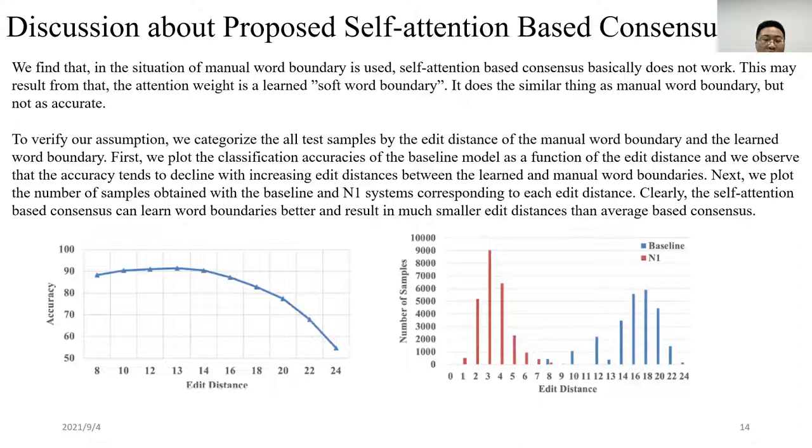While one of the most significant differences between our proposed framework and the previous method is the proposed self-attention based consensus. This ensures that the model pays more attention to the relevant frames during classification. Therefore, the result of the system using only self-attention, denoted as N1, improves the classification performance over the average based consensus in baseline. To further analyze why our proposed self-attention can outperform the conventional average based consensus, we retrain the models using the baseline N1, N3, and N4 using the word boundary information and obtain four improved systems denoted as N5, N6, N7, and N8 respectively. The major difference here is to apply average or self-attention based consensus only on frames which are relevant to the annotated words.